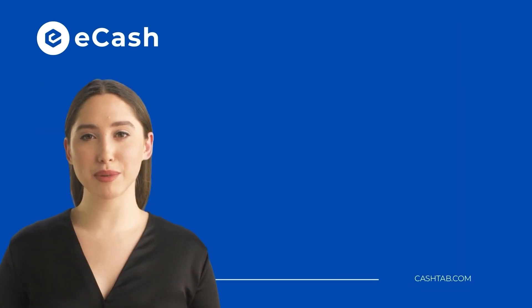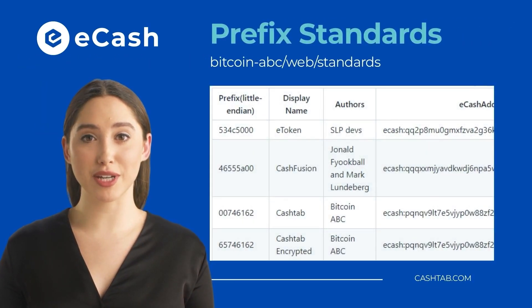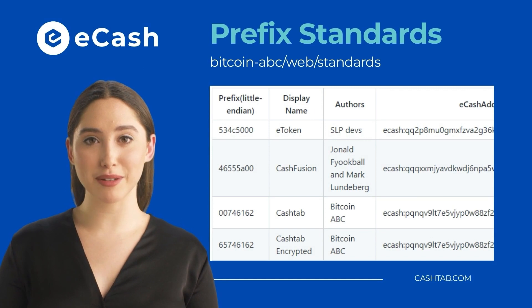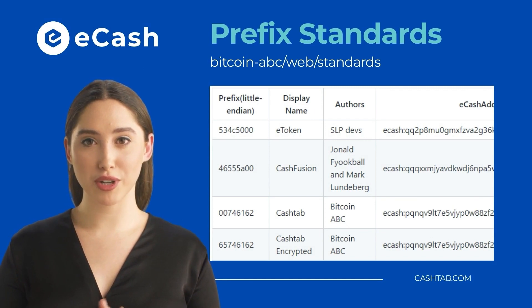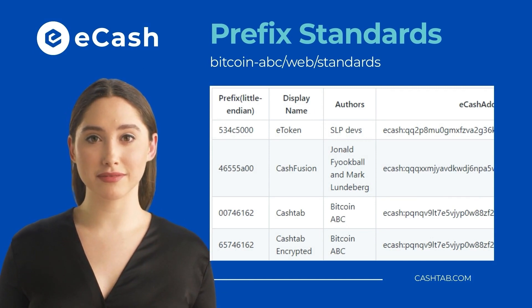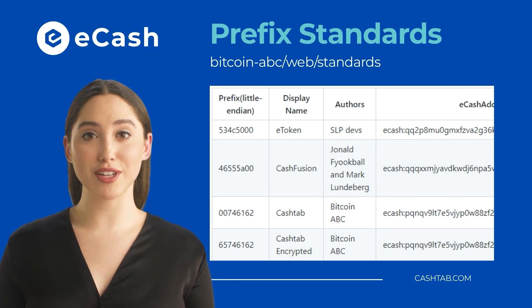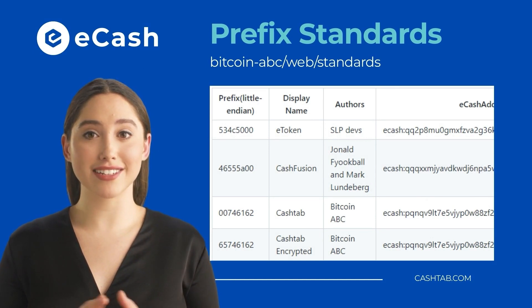As we expand the e-cash ecosystem, there will be additional prefixes added for more complex actions, such as bridging e-tokens to other chains, interacting with decentralized exchanges, or your next e-cash app feature. This is why CashTab's parsing logic is a good place to start as a reference guide, as it is set up to parse unlimited script codes and messages beyond CashTab's current requirements.